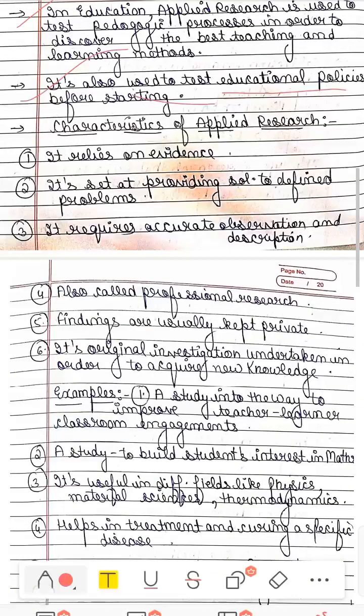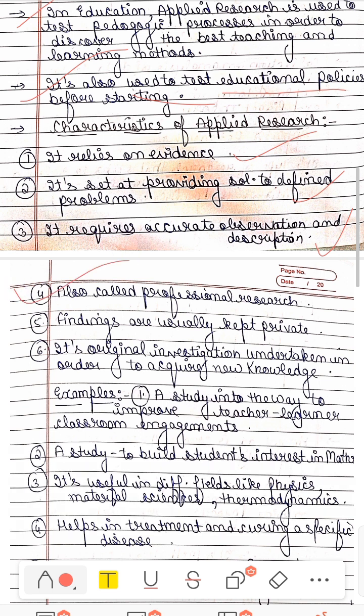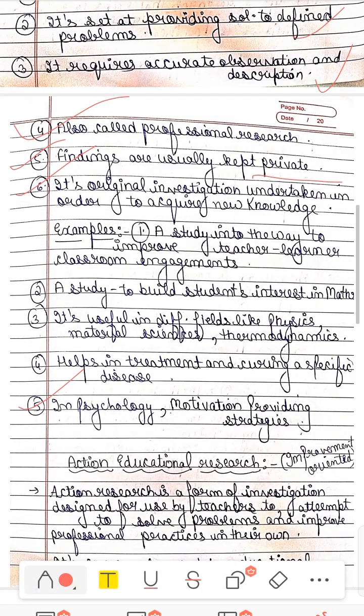What are some characteristics of applied research? It is set at providing solution to the defined problem. It requires accurate observation and description. Proper observation should be there then you will research. They also say professional research findings are mostly private, confidential, everyone is not told. This is an original investigation which we do for knowledge. For example, in psychology motivation producing strategies help in treatment and curing specific diseases. Study to build student interest in mathematics and see how you can build the child's interest. These are all examples.